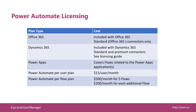Looking at the licensing for Power Automate — Microsoft doesn't make this easy, but there are basically a number of plans. If you've got Office 365, which most people on the call have, you actually have the standard Office 365 connectors included. There's a ratio of 700 runs per user per month — so if you've got 1,000 people licensed for Office 365, you could run any workflows as long as the total runs were less than 700,000 per month, which is a big number. If you need more, you can buy more.